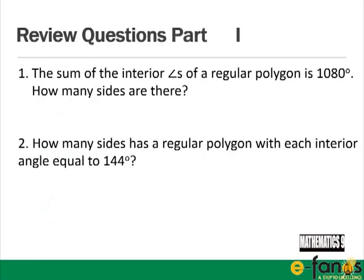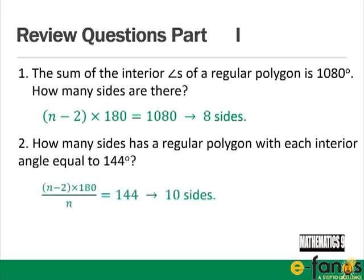Review questions part 1: The sum of the interior angles of a regular polygon is 1080°; how many sides are there? Answer: (n − 2) × 180 = 1080 gives n = 8. How many sides has a regular polygon with each interior angle equal to 144°? Answer: (n − 2) × 180 / n = 144 gives n = 10.